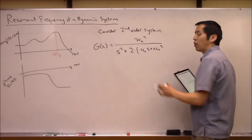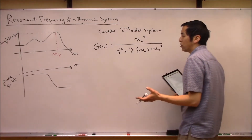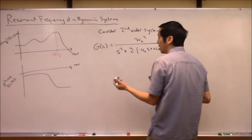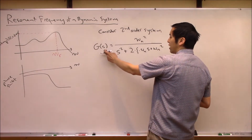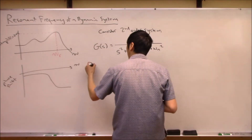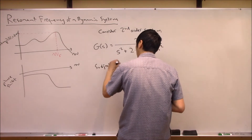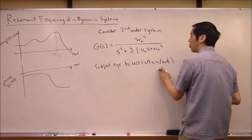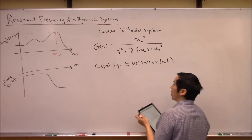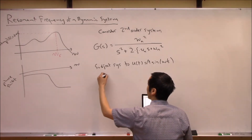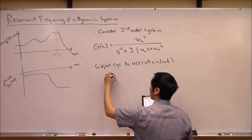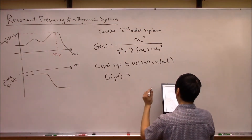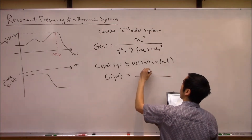Now we want to get a Bode plot for this system. To do that, I'll first calculate the frequency response by plugging in jω everywhere I see an s. We're subjecting the system to u(t) = A·sin(ωt), a sinusoidal input, and the frequency response is given by G(jω).